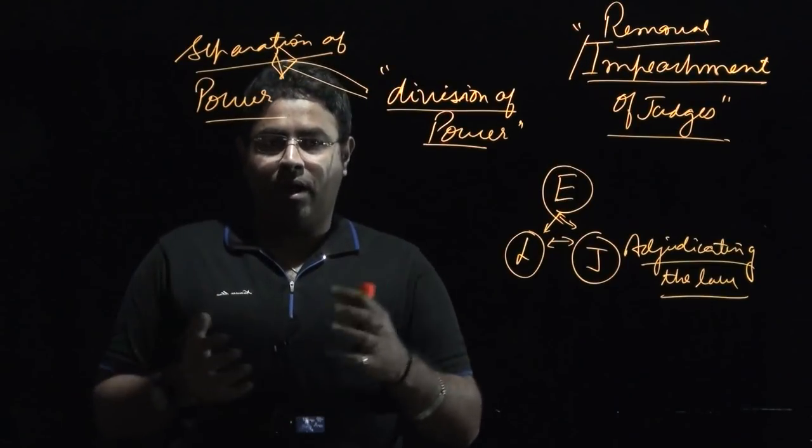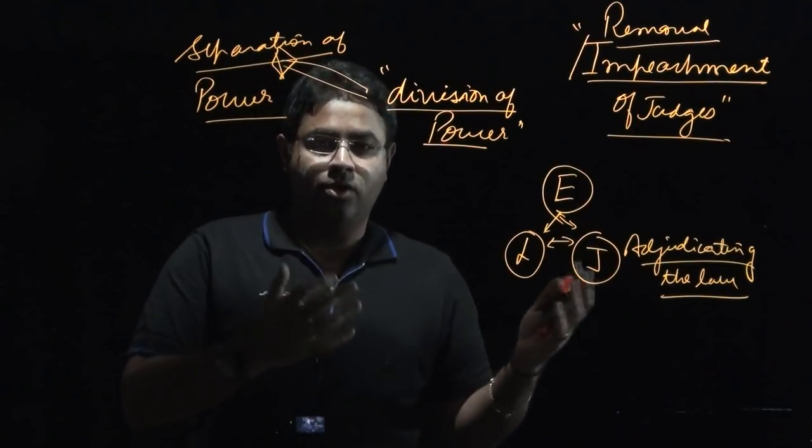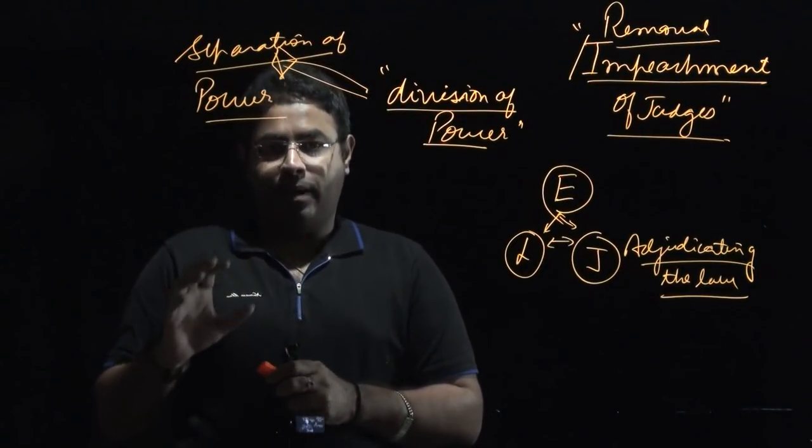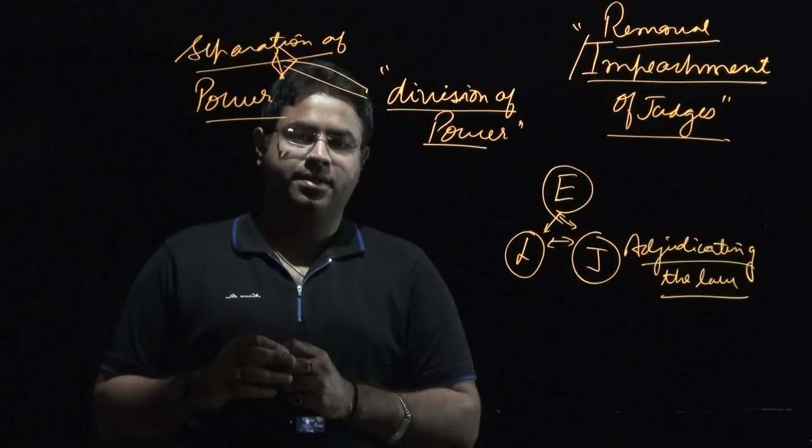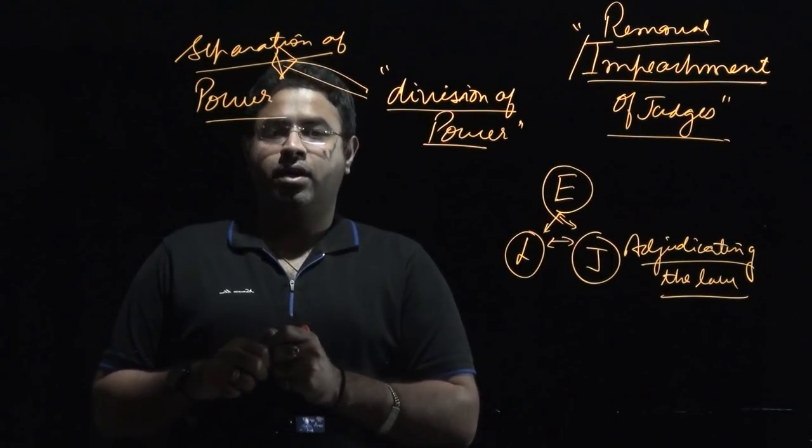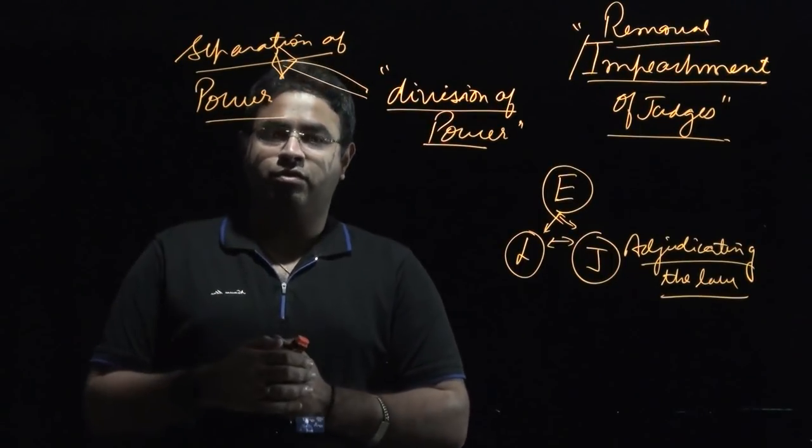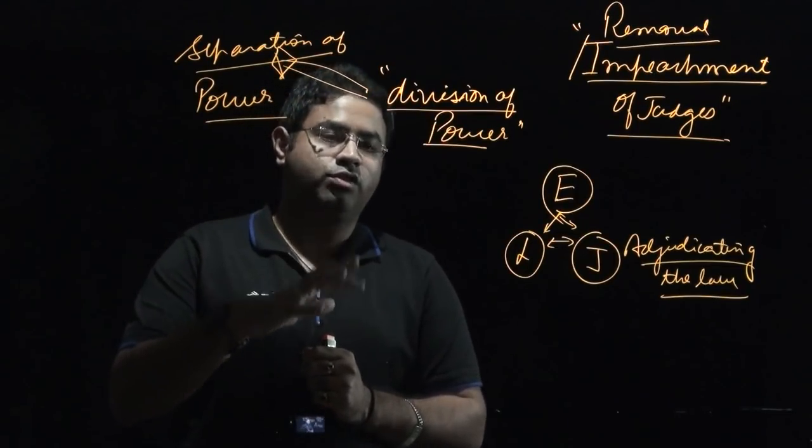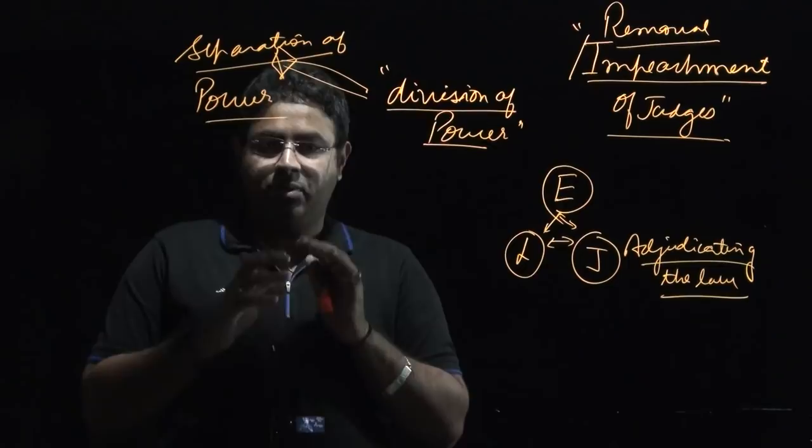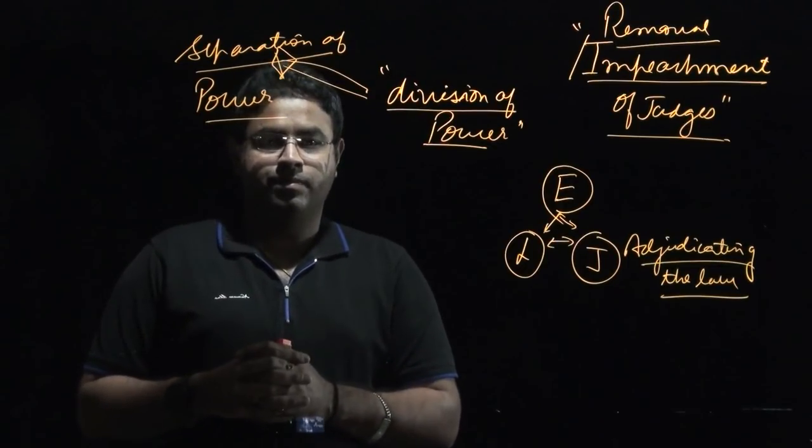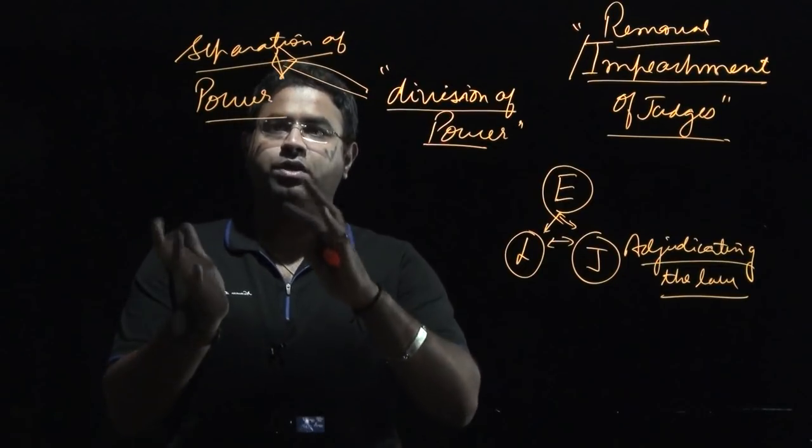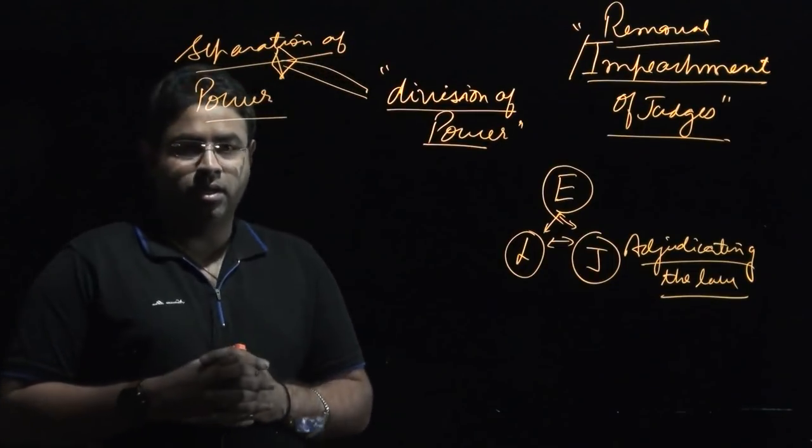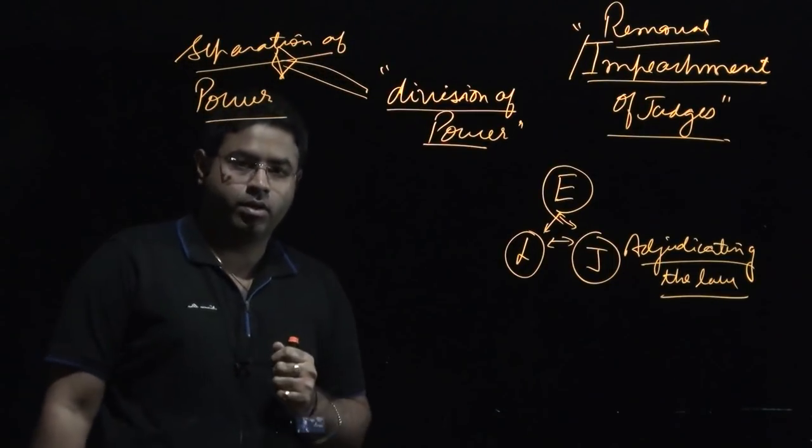Because India had adopted a parliamentary form of government, we could not have chosen separation of power. That's the reason why we have chosen this division of power, the diluted form of separation of power. We still have accorded a lot of importance to the scheme of checks and balances.